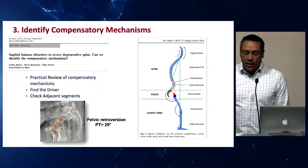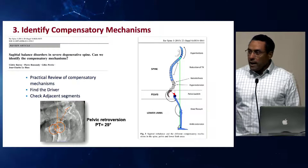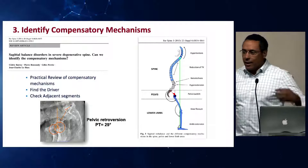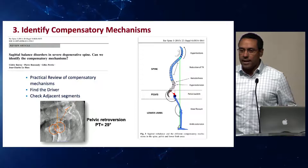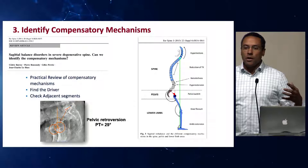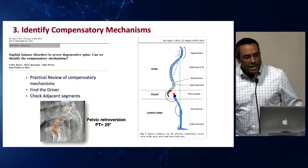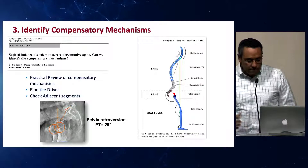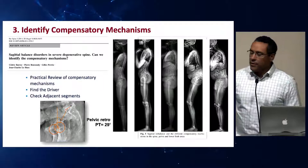Identifying compensatory mechanisms can be done by physically observing patients. I always have people stand up in clinic and ask them to point to where their pain is — but what I'm really doing is observing how they achieve their own posture. You see knee flexion. You see people inducing a pelvic tilt to get their shoulders back, which gives you further insight into their compensation.